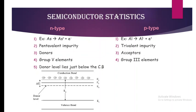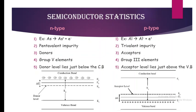In p-type semiconductor we have the acceptor level which lies just above the valence band. The valence band has a number of electrons, the acceptor level is just above it, and the Fermi energy level is intermediate between the acceptor level and the valence band.